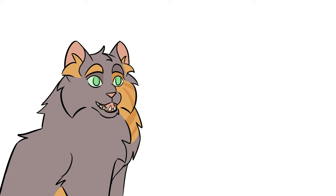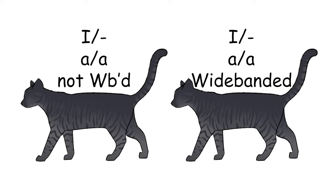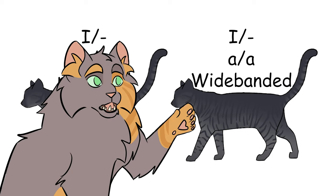Okay, enough tabbies. What about smokes? If wideband interacts with inhibitor, what does it do to smokes? Nothing. Because even though inhibitor is there, wideband still won't affect a self-cat. Wow. Okay.